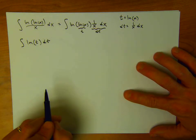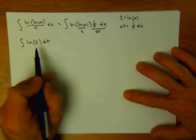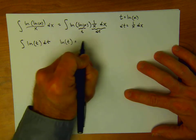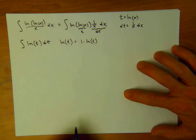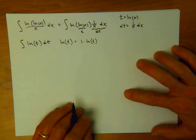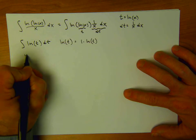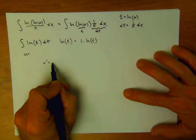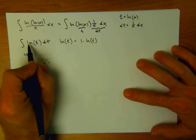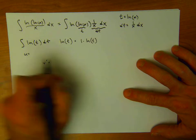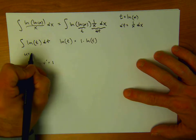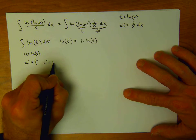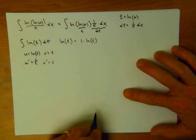So our new improved integral is the integral of natural log of t dt. This is one we can use integration by parts on. The trick is to recognize that ln(t) is the same as 1 times ln(t), and we can think of 1 as a function. It doesn't make sense to call natural log v prime because that's the problem we're trying to solve. So let v prime equal 1 and u equal natural log of t. Then u prime is 1/t, and the antiderivative of 1 is just t.